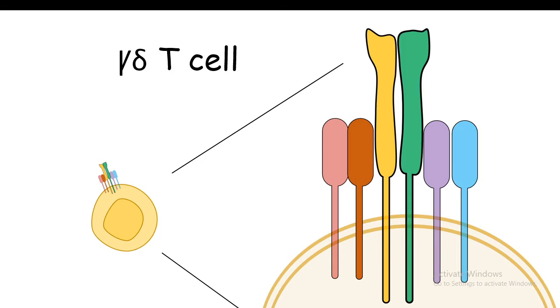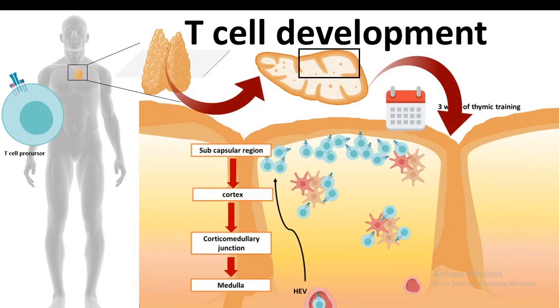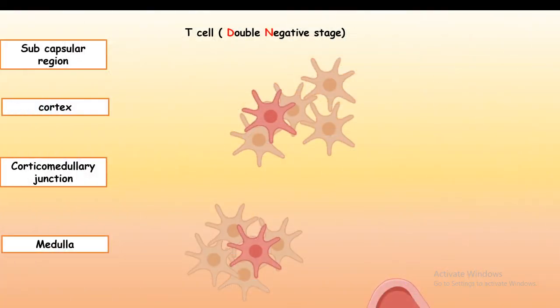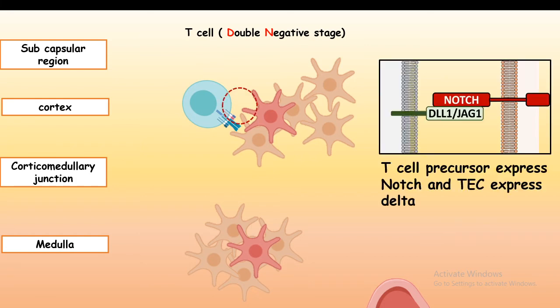T cell development takes place in the thymus and takes several weeks, progressing through several stages at different strata inside the thymus. The first stage is called the double negative stage, where commitment towards the T cell lineage takes place, and Notch signaling has a huge role to play in that. There is a separate video on T cell lineage commitment linked in the description.